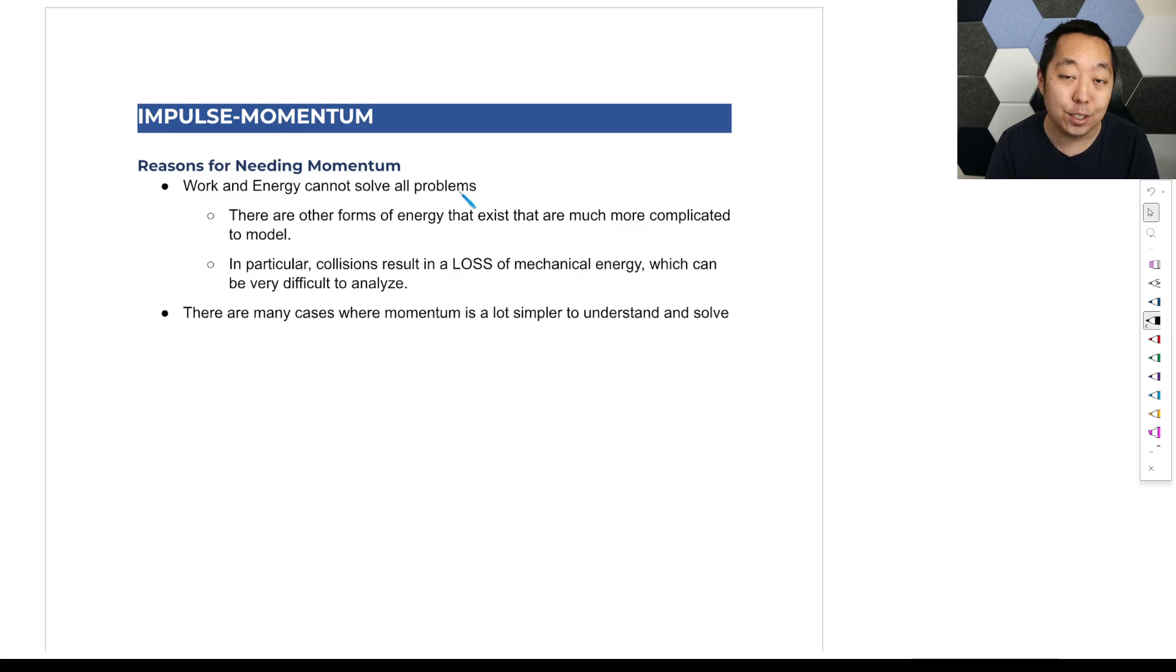There are other forms of energy that exist that are much more complicated to model. So far, the energy forms we talked about were kinetic energy, gravitational potential, and spring potential. But there are other forms that we don't normally model. And in particular, one specific case, which we'll get to later on, is collisions result in the loss of mechanical energy, which can be very difficult to analyze because there's energy in like chemical bonds, there's energy, there's like nuclear energy.